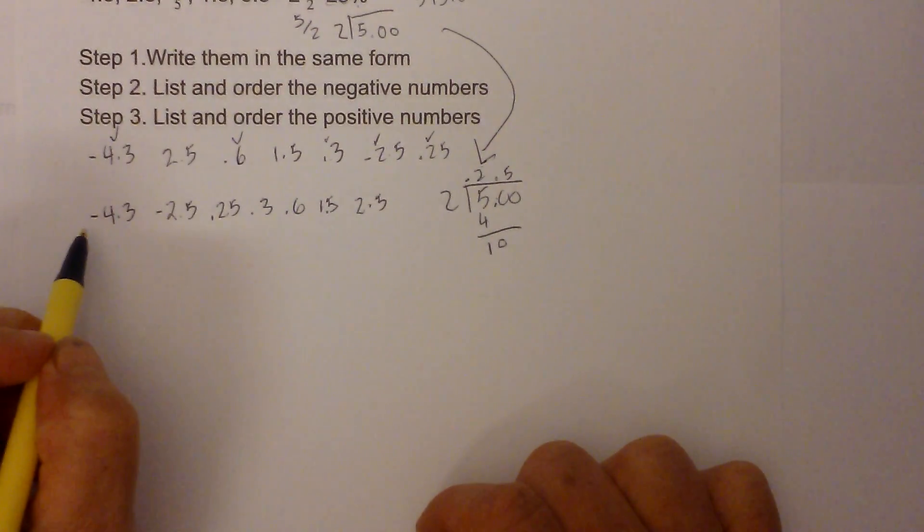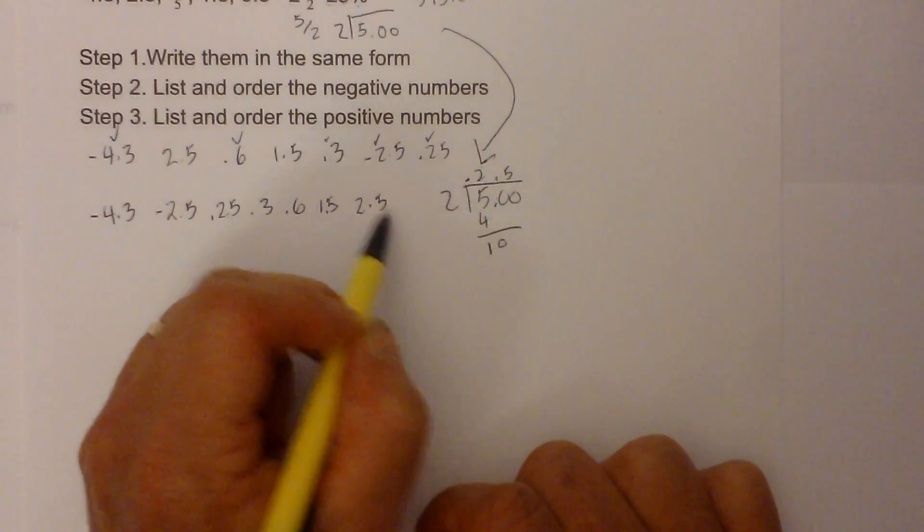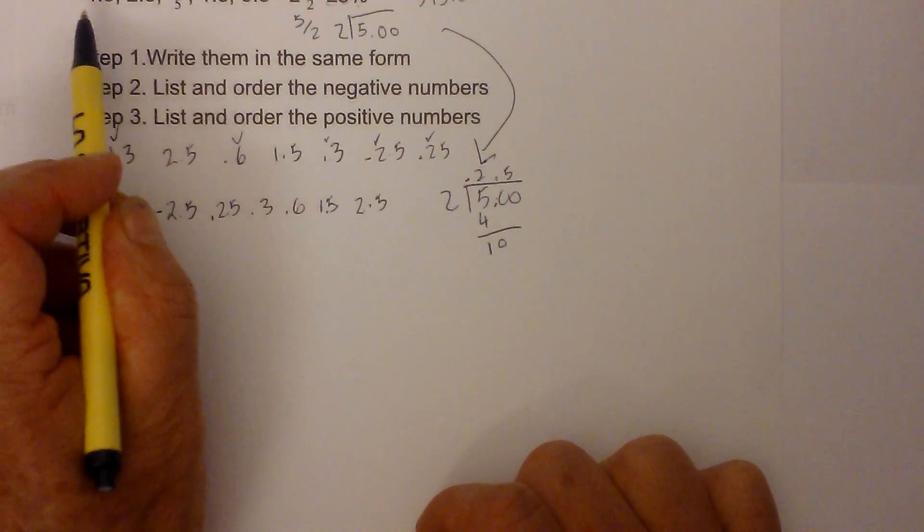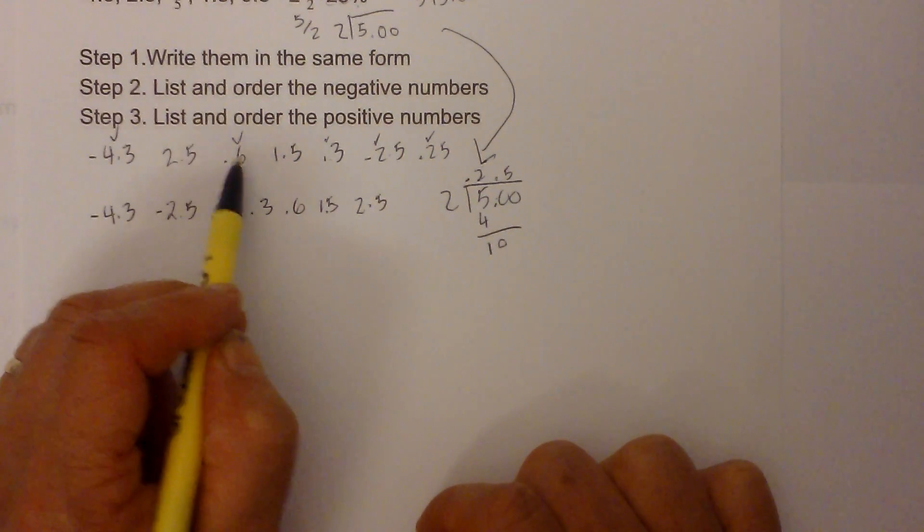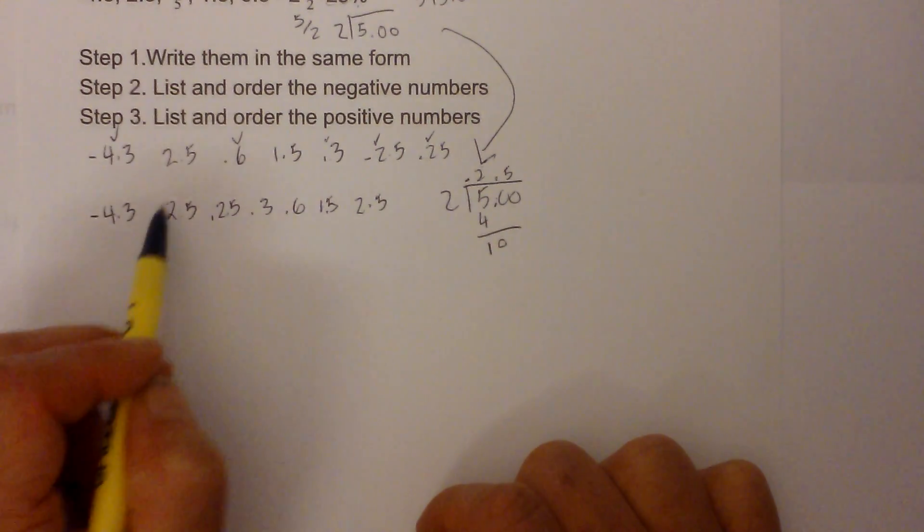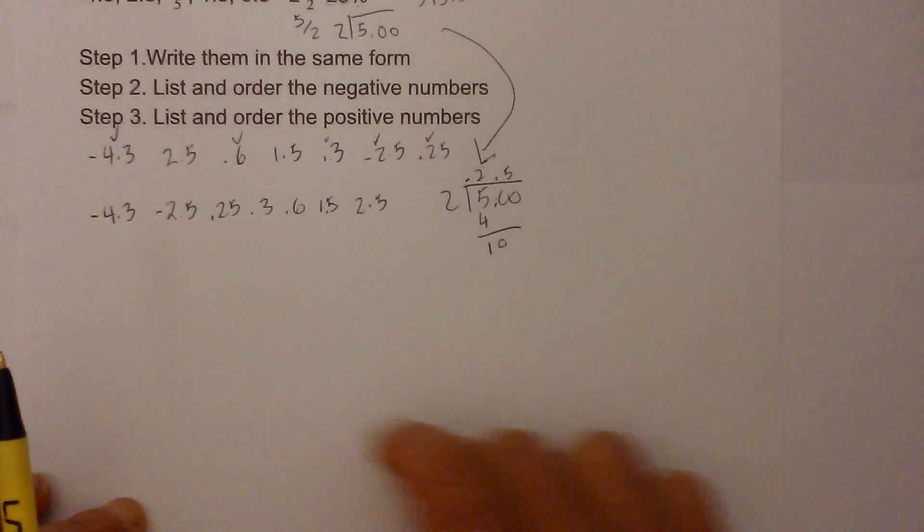So there they are, from least to greatest. I put them in the same form, which was a number with a decimal, then I listed the negative first, and then listed the positive numbers.